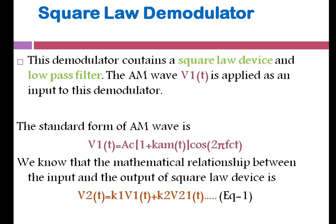This demodulator contains a square law device and a low pass filter. The amplitude wave given as V1(t) is applied to the demodulator input. V1(t) is the modulated output — the combination of message signal and carrier signal. The conventional amplitude modulated wave's equation is: V1(t) = Ac(1 + Ka·m(t))·cos(2πfc·t). This is the standard AM wave given as input to your demodulator.